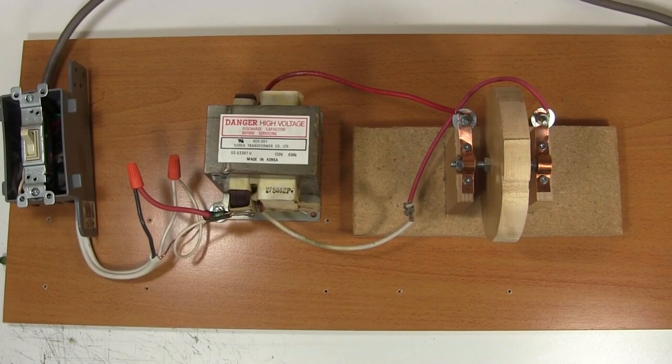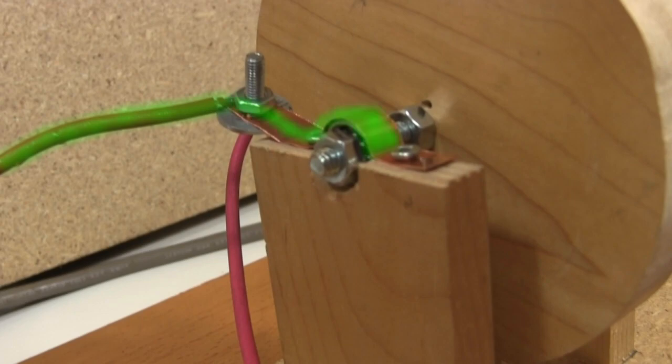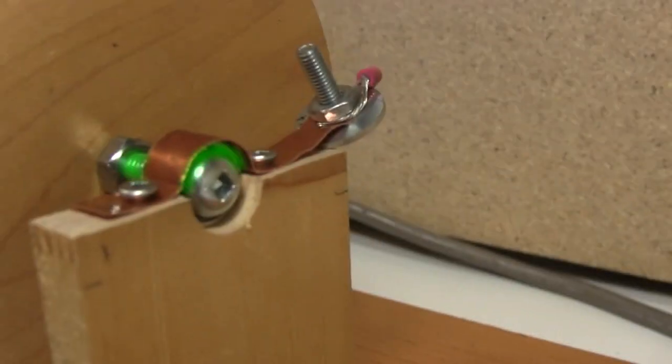The only electrical connections to it are this wire and this wire. The electricity goes from this wire, across this strip of copper, through this bearing, to this shaft, and then through this bearing, across this strip of copper, and to this wire. And that's it!